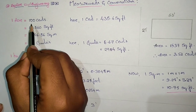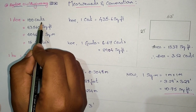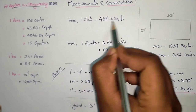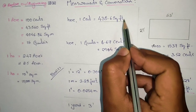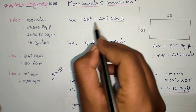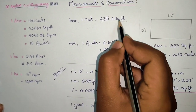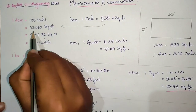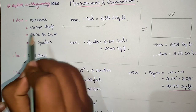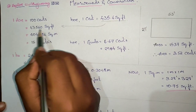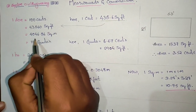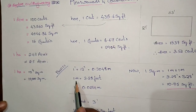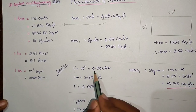Firstly, one acre equals 100 cents. Here, one cent equals 435.6 square feet. So one acre equals 435.6 square feet multiplied by 100 cents, which gives 43,560 square feet. Therefore, one acre equals 43,560 square feet. Also, one acre equals 4046.86 square meters.